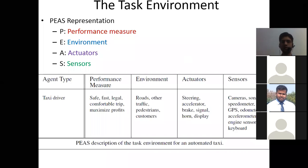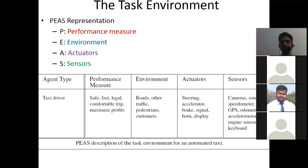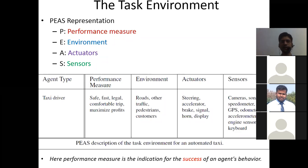The environment is the road, traffic, pedestrians, and customers. The actuators are the steering, accelerators, brakes, signal, horn, and display — actuators are those things through which you can take actions. Sensors are like your input devices through which you perceive the environment: cameras, sonar, speedometer, GPS, odometer, accelerator, engine sensors, and keyboards. The performance measure is the indication of the success of an agent's behavior.